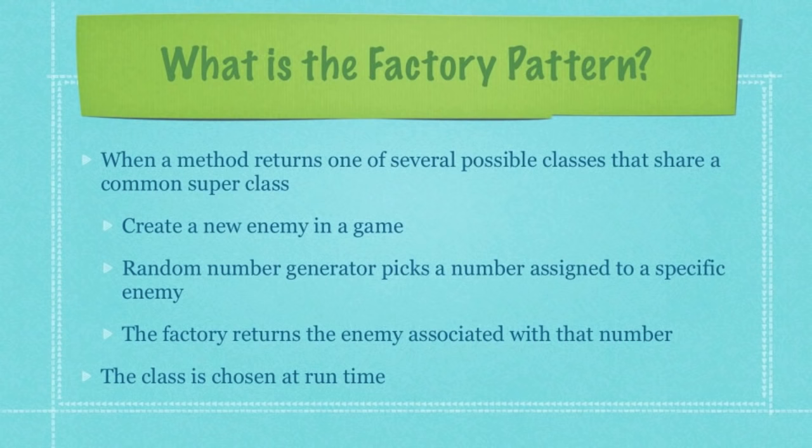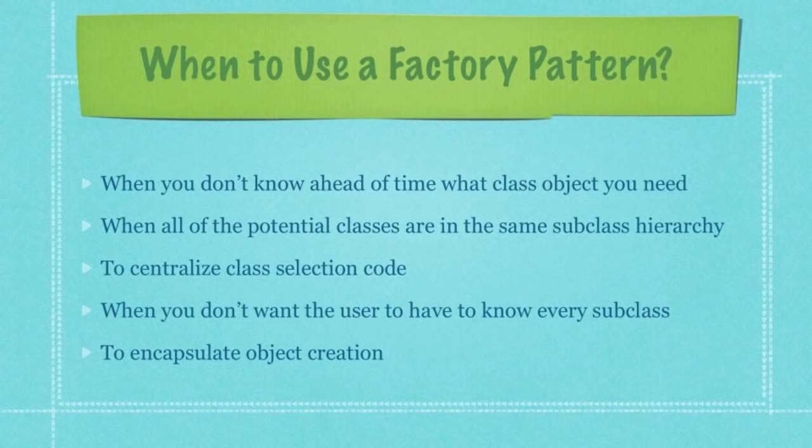So when would you use the factory pattern? When you don't know ahead of time what class object you might need. However, make sure that all the potential classes are of the same subclass hierarchy — meaning somewhere up the list, they all have the same superclass. You would also use a factory pattern to centralize class selection code when you don't want the user to know every single potential subclass, and of course to encapsulate object creation, which is always great.